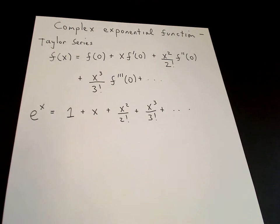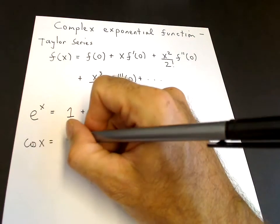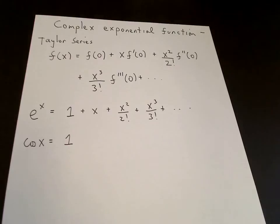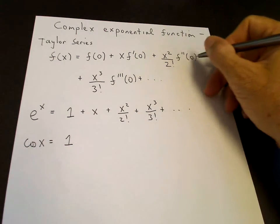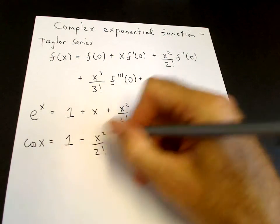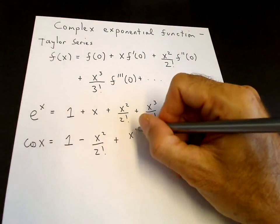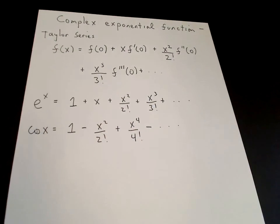For trigonometric functions, starting with cosine x: cosine of 0 is 1. The derivative of cosine is minus sine, and sine of 0 is 0, so the linear term proportional to x vanishes. The second derivative of cosine is minus cosine, so minus cosine of 0 is minus 1, giving us minus x squared over 2 factorial. The cube term vanishes, and we get plus x to the 4th over 4 factorial, minus, etc. That is the series for cosine.